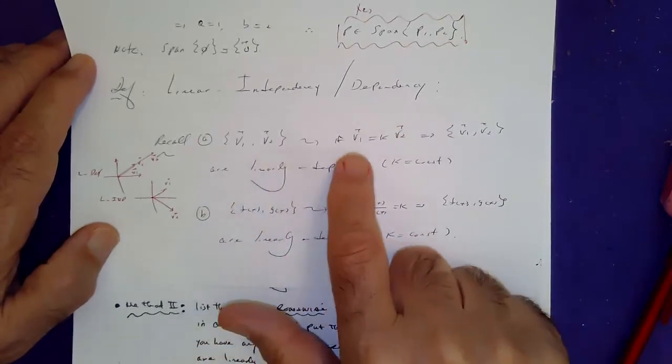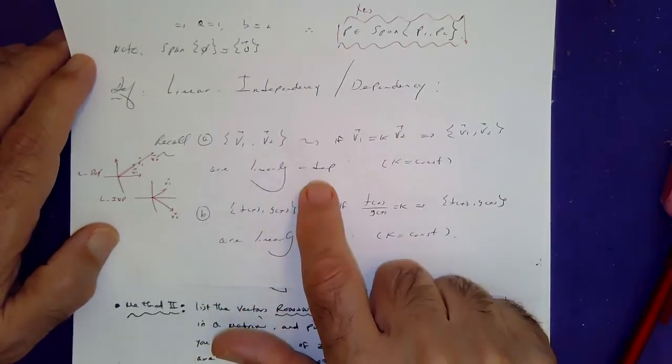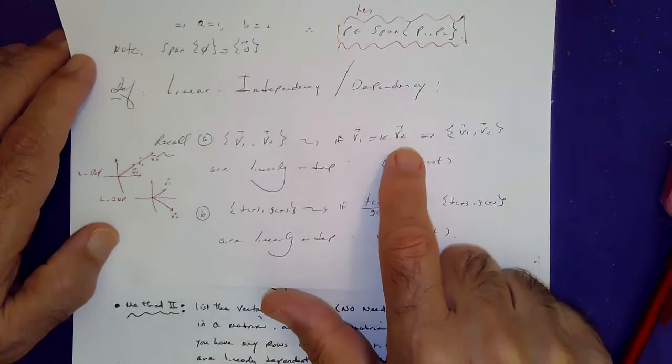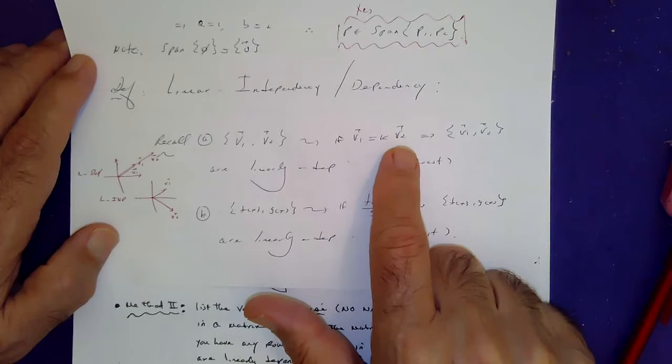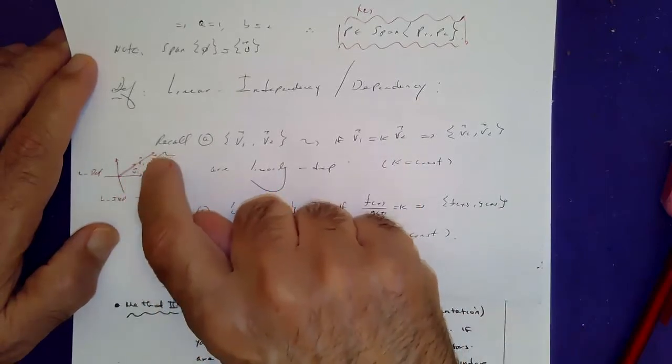If you recall, two vectors are said to be linearly dependent if they are parallel to each other. In other words, one vector is a scalar multiple of the other one. In other words, they are collinear.